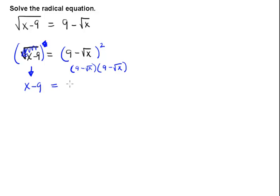9 times 9 gives us 81. 9 times negative square root of x is a negative 9 square root of x. For the inners, I have negative square root of x times 9, which is also a negative 9 square root of x.